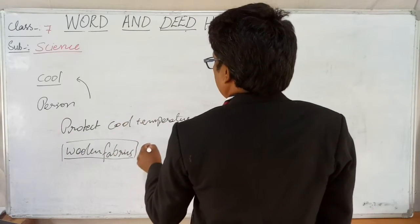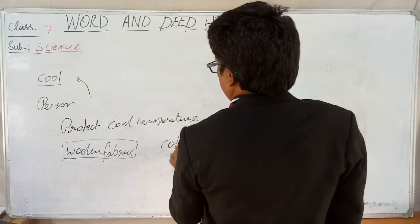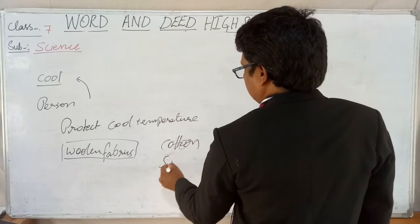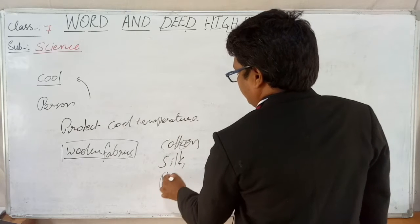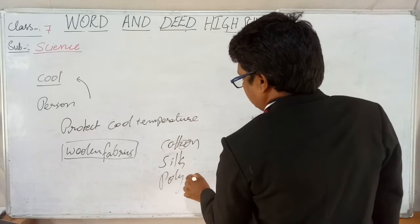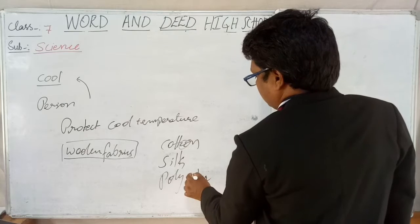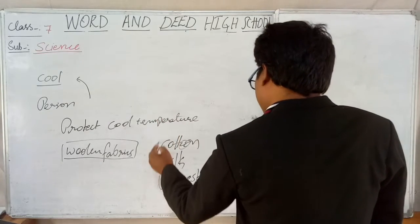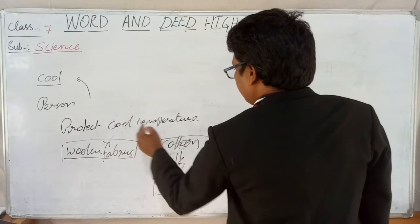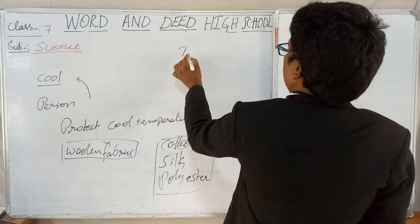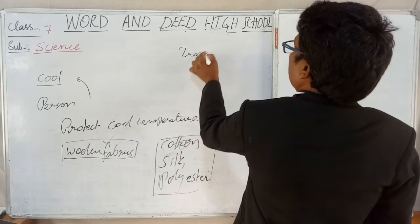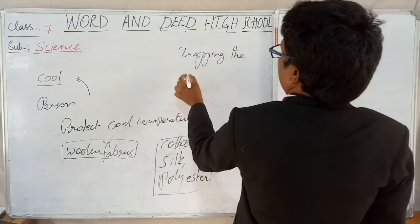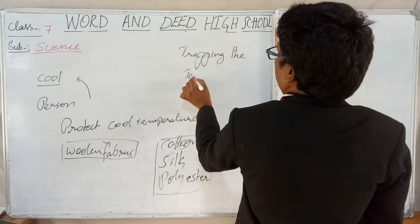What is the main property of woolen fabric? Why should the person carry only woolen fabric? Why shouldn't he carry cotton, silk, or polyester? The main property of woolen fabric is trapping — trapping the temperature.